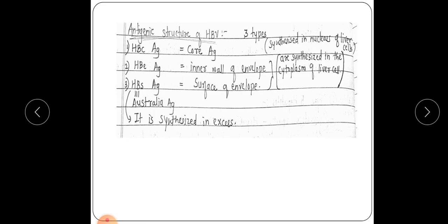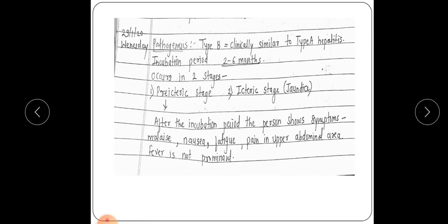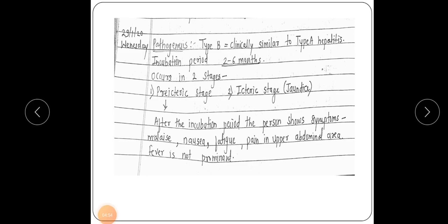The pathogenesis of Hepatitis B is clinically similar to type A hepatitis. The incubation period is two to six months. The disease occurs in two stages: the pre-icteric stage and the icteric (jaundice) stage — the same two stages as Hepatitis A.